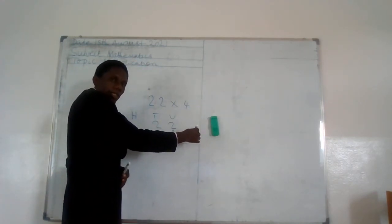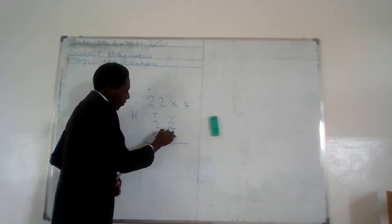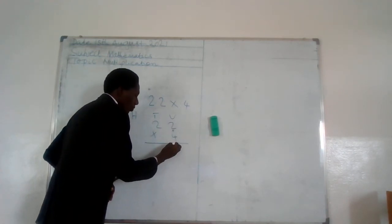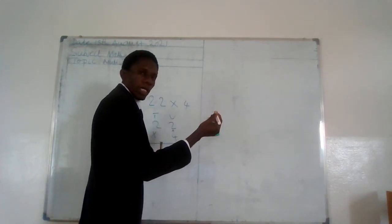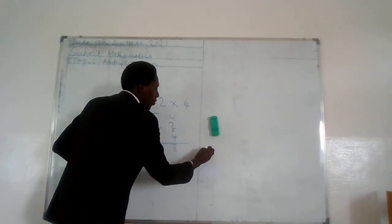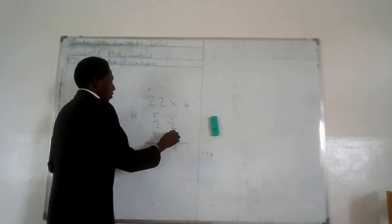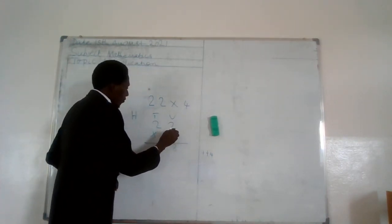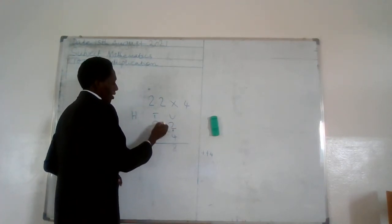So 4 times 2 would be 8. 4 times 2 means 4 into 2 places—it's like saying 4 plus 4. So 4 times 2 is 8. You have 8 here. And 4 times 2 again, this same 4 here times 2, gives you 8.